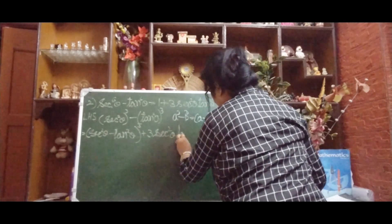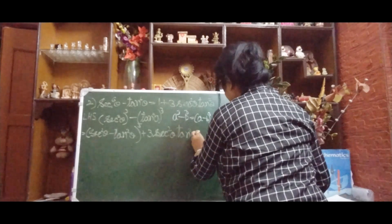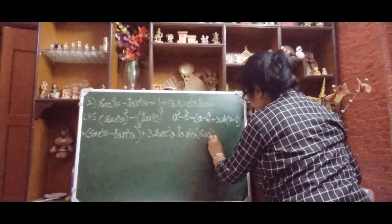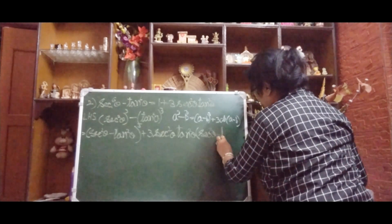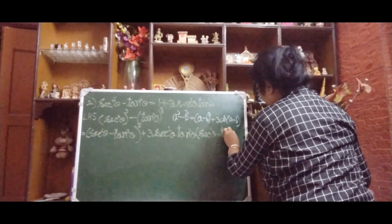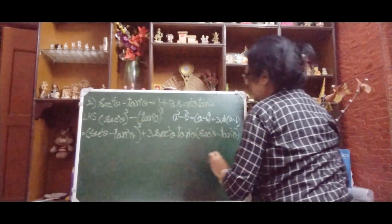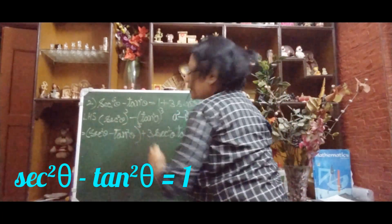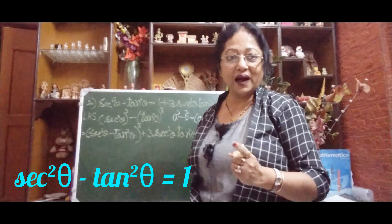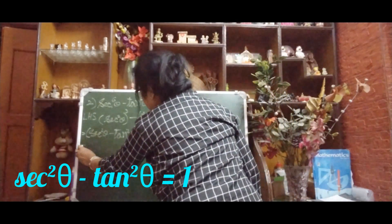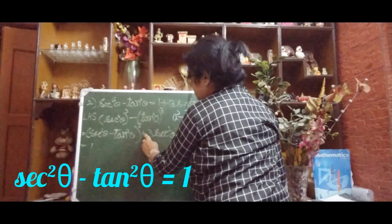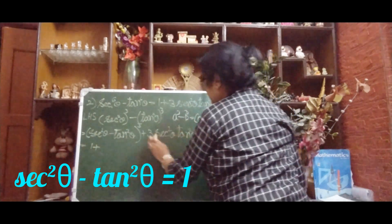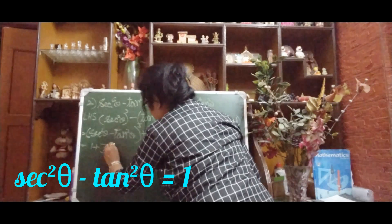Now sin²θ − tan²θ equals 1. So (sin²θ − tan²θ)³ = 1³ = 1. With a plus sign, we now write plus 3·sin²θ·tan²θ. We can see our right hand side is coming together.